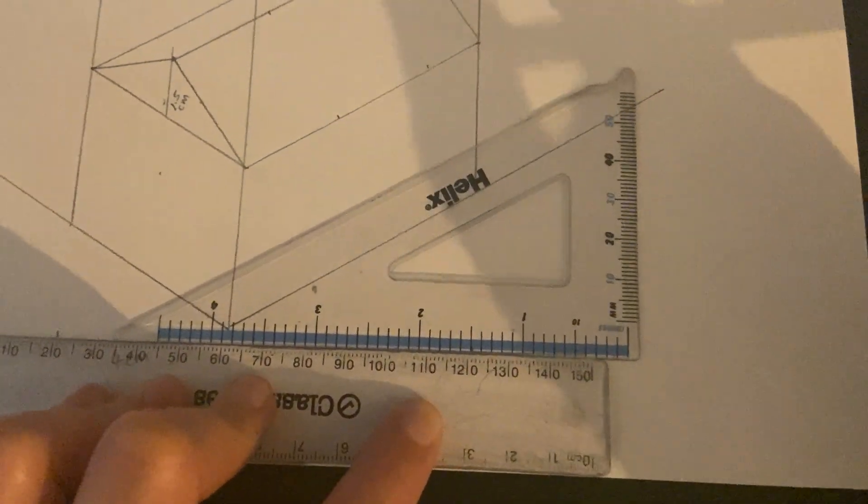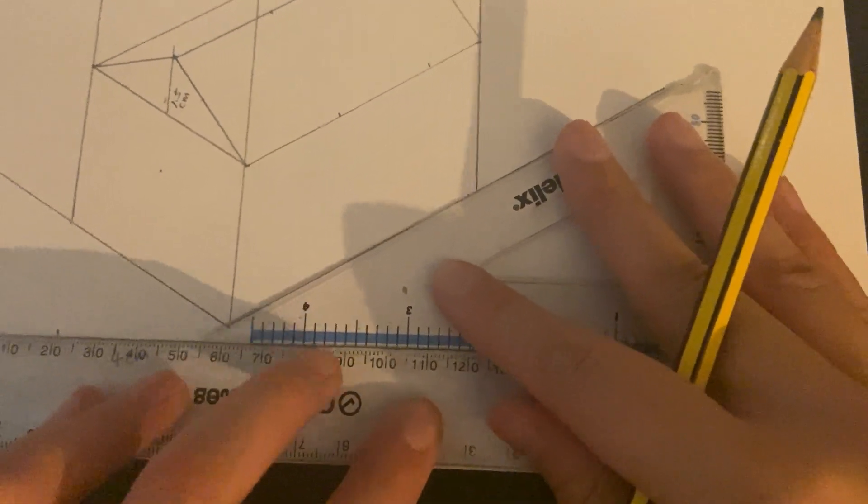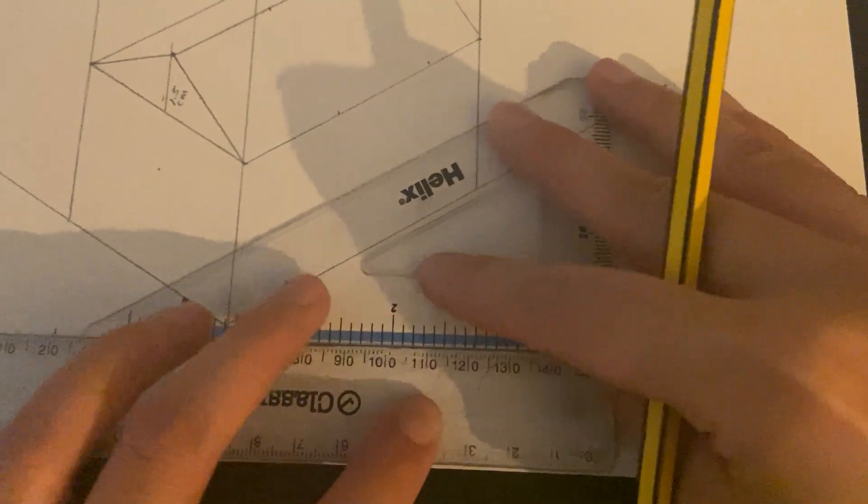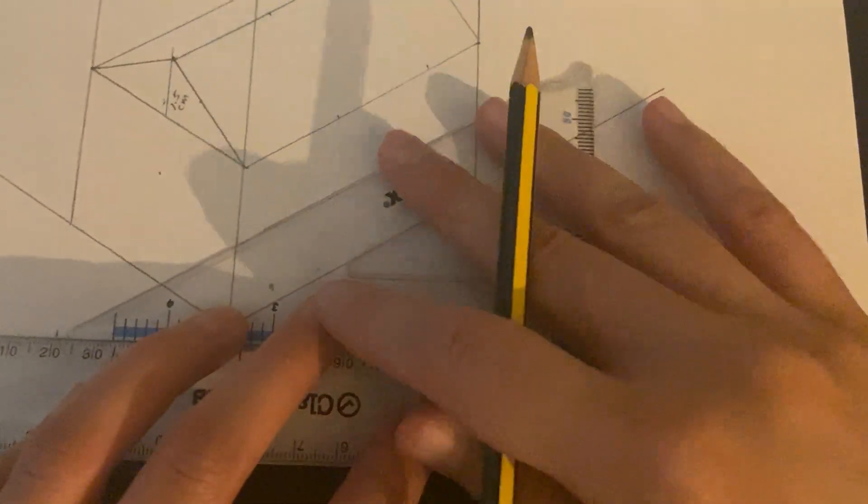So we know that this line is going to be parallel. We need to draw a window in, so I'm going to draw some marks very lightly.